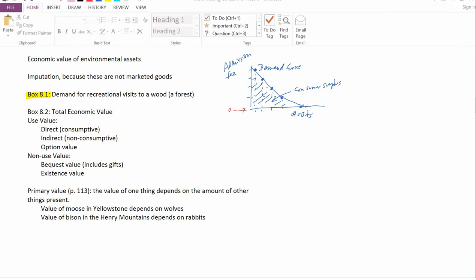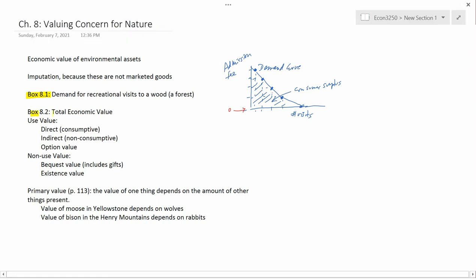So let's think more now about total economic value, which is in box 8.2. There are two main divisions, use value and non-use value. And I think the easiest way to understand this is by going through examples. The three kinds of use value, the first is indirect use value.